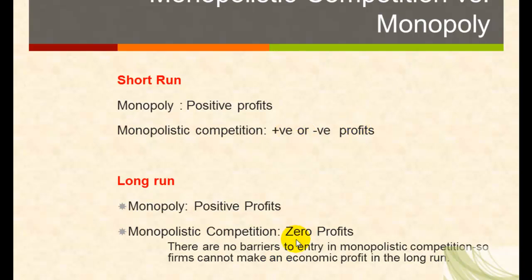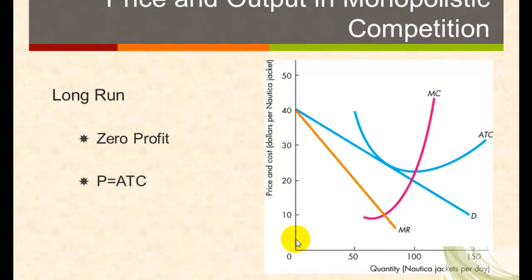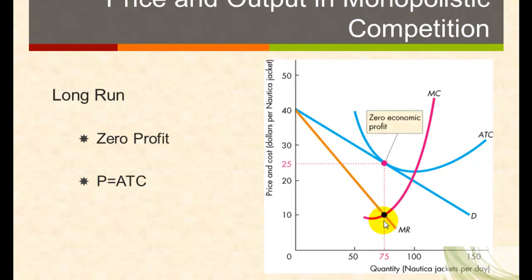In the long run, firms in monopolistic competition make zero profits. The reason is that there are no barriers to entry — if firms are making positive profits in the short run, more firms will enter the market until profits are driven down to zero. This is what the graph looks like for one firm in a monopolistically competitive industry making zero profits: equilibrium quantity is where marginal revenue equals marginal cost, and price equals average total cost.